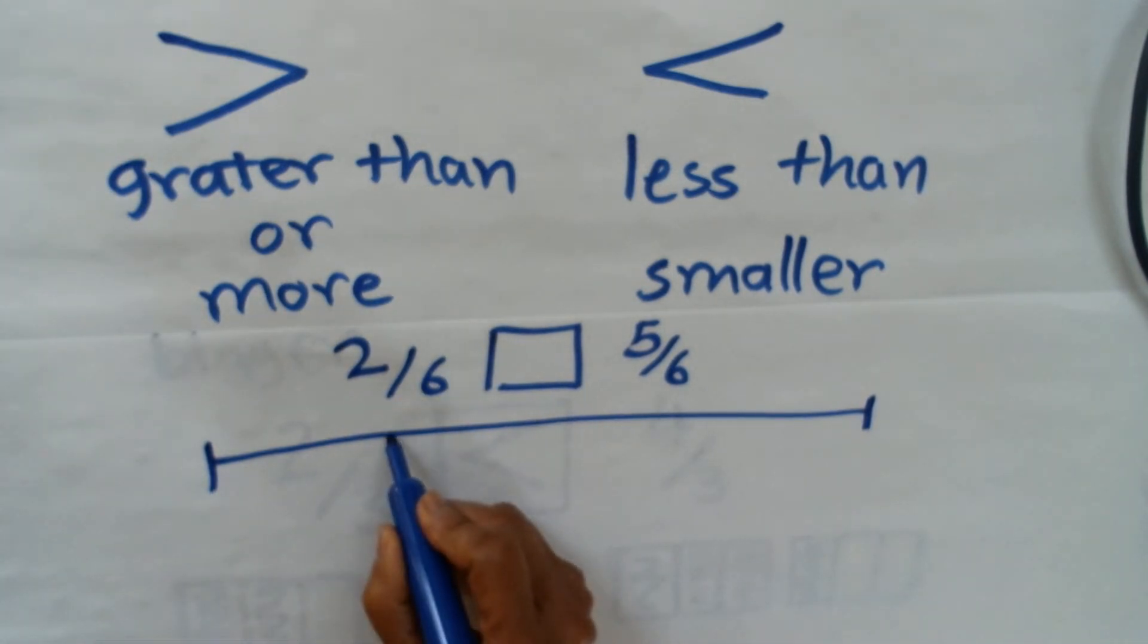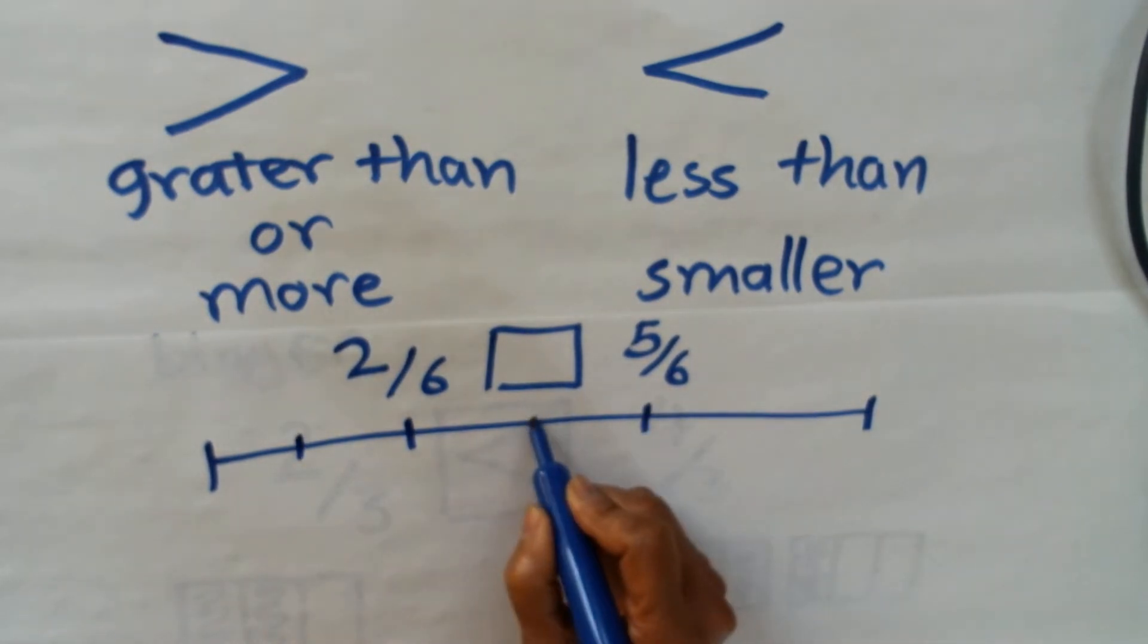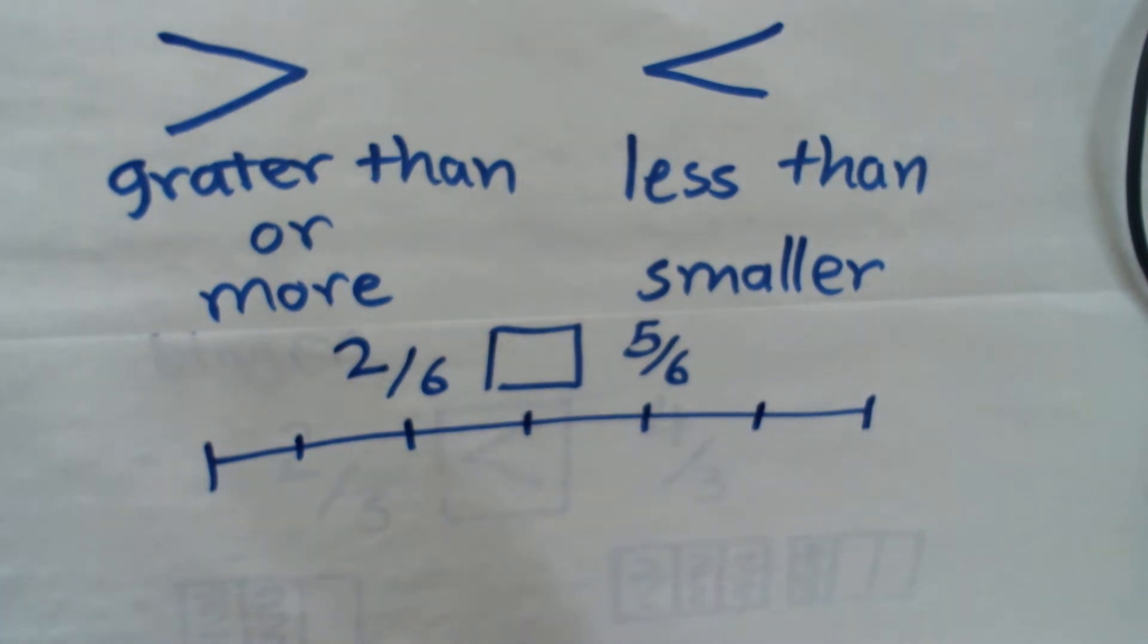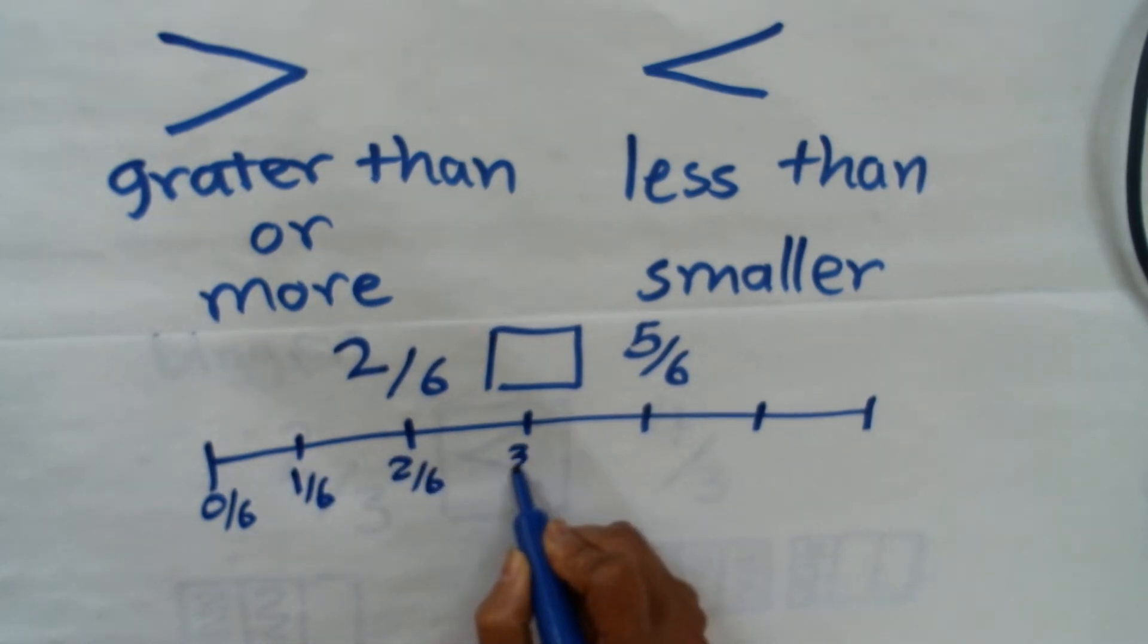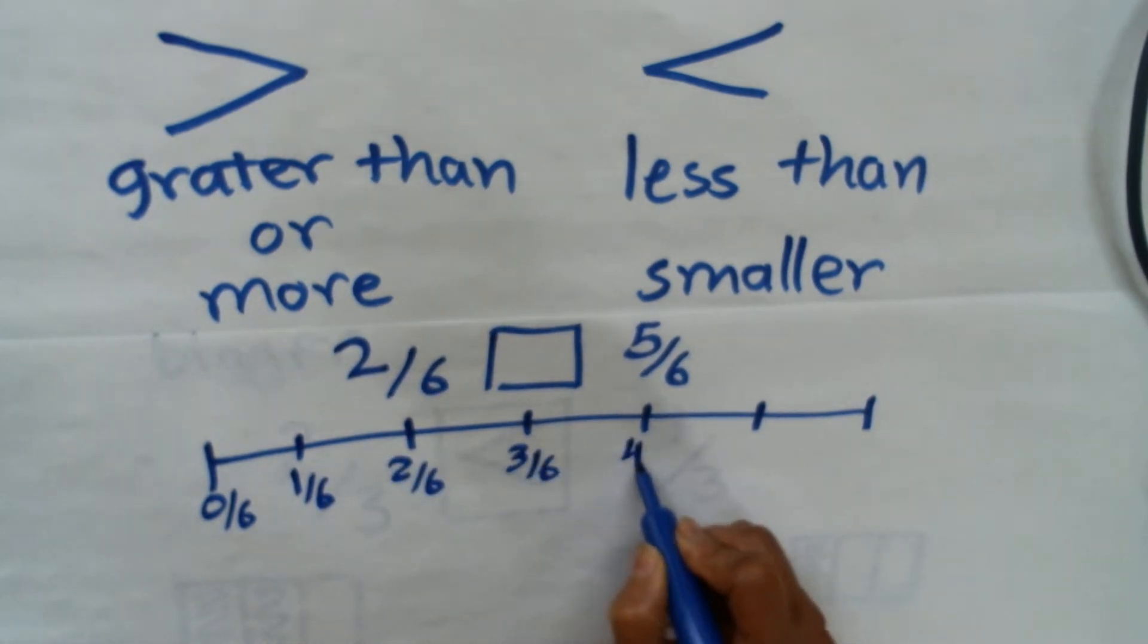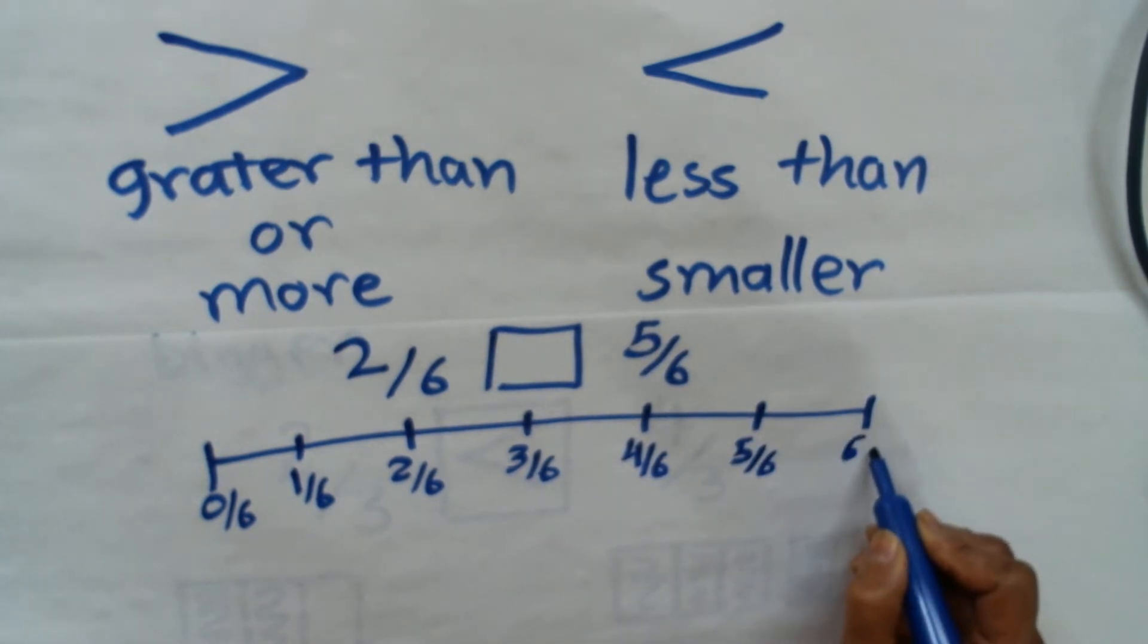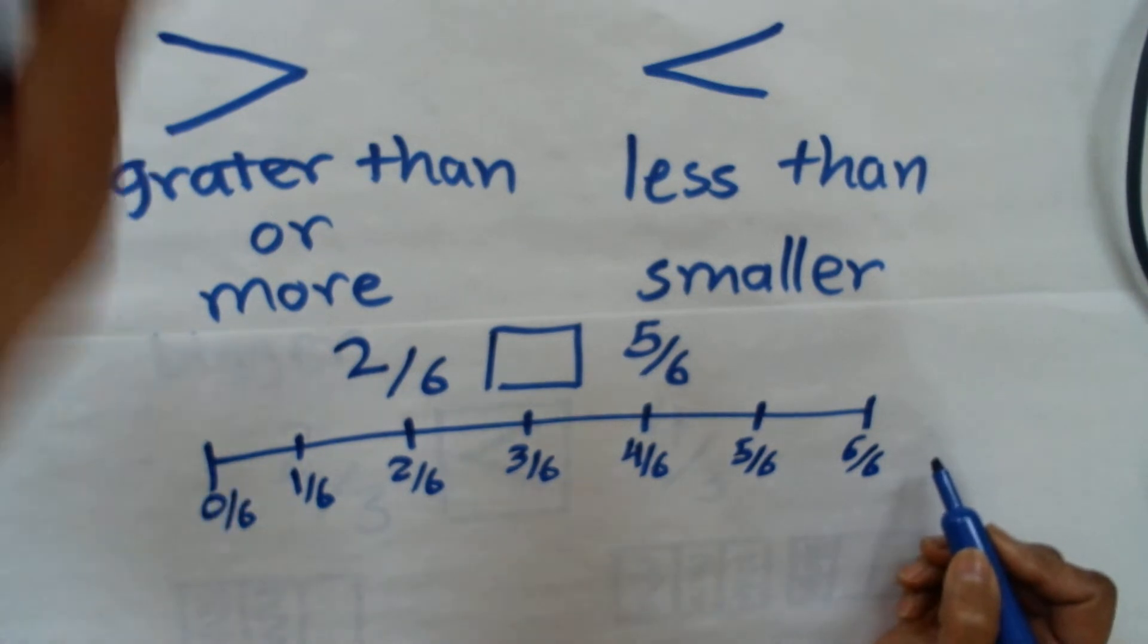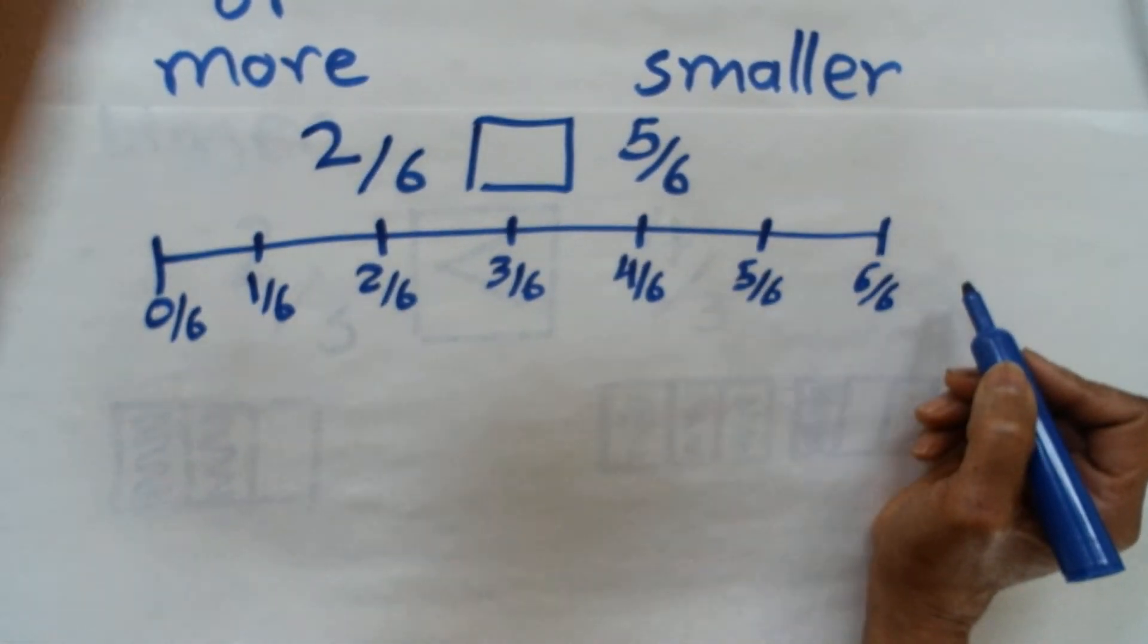I have to make 6 equal parts on my number line, and then I will label them 0/6, 1/6, 2/6, 3/6, 4/6, 5/6, and 6/6. Now I need to locate them. Where is 2/6?